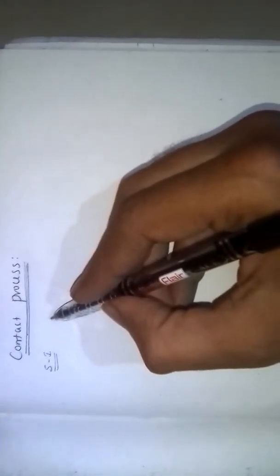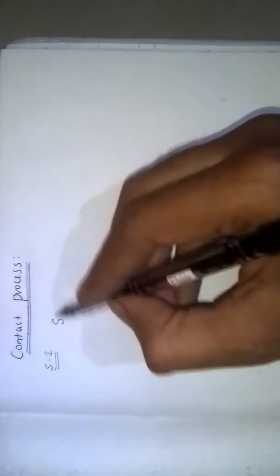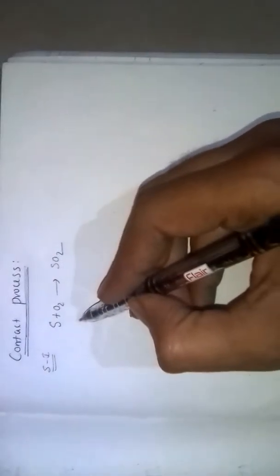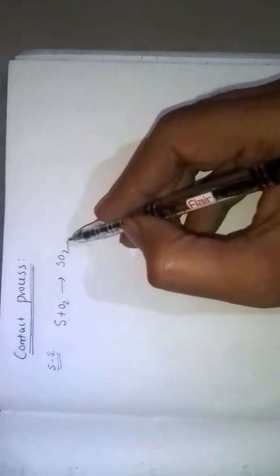Step 1: Burning of sulphur or sulphide ores to form sulphur dioxide. S plus O2 gives SO2, or burning of sulphide ore also gives sulphur dioxide.